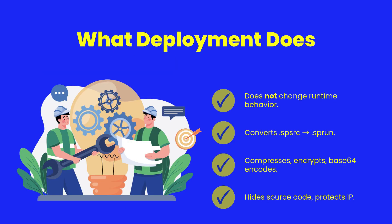Deployment doesn't change how your program runs — it enhances how it's distributed. ShearPower takes your source code, compiles it into an .sp-run file: compressed, encrypted, and base64 encoded. The result is fully protected intellectual property, ready for secure transfer or commercial use.